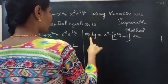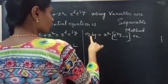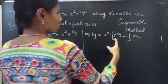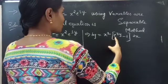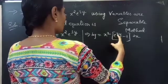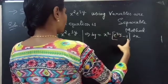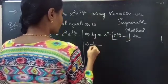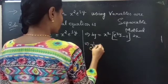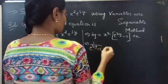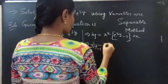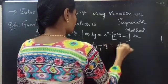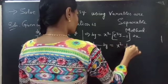Now we should get all the y terms on one side. So we take e to the power 3y minus 1 to the RHS, giving 1 over (e to the power 3y minus 1) dy equals x squared dx.